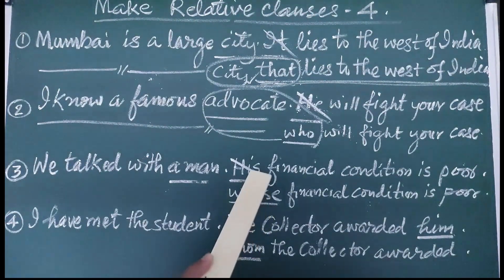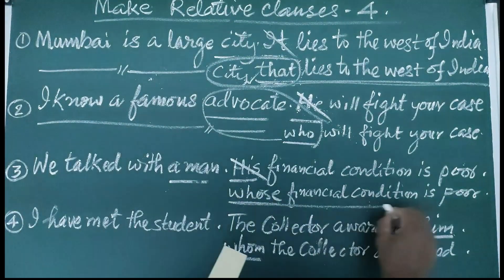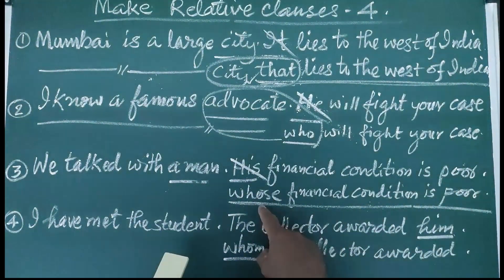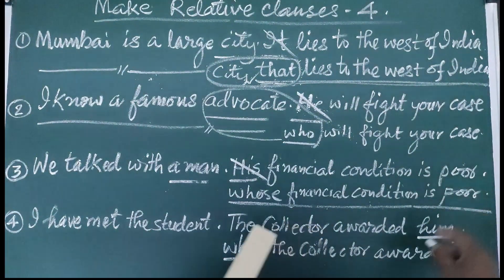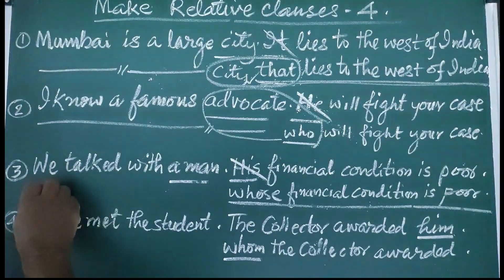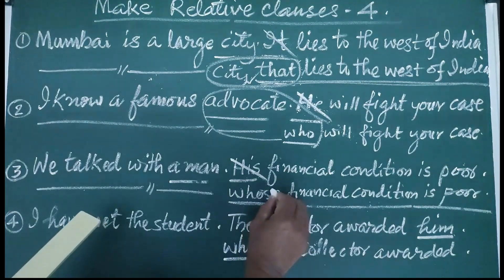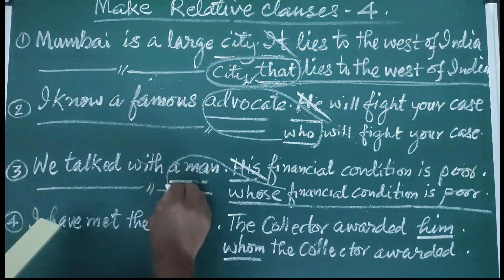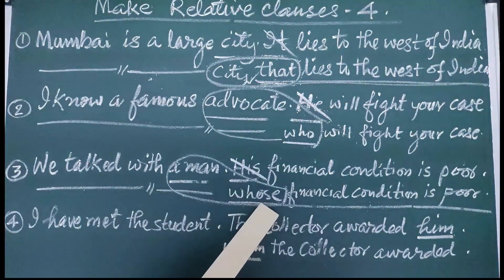Therefore, we shall delete 'his' and convert the second sentence into a relative clause by writing 'whose financial condition is poor'. We have automatically made the relative clause. Now we are adding the relative clause to the main sentence. Here, 'whose' and 'man' are the antecedent and the pronoun going together.